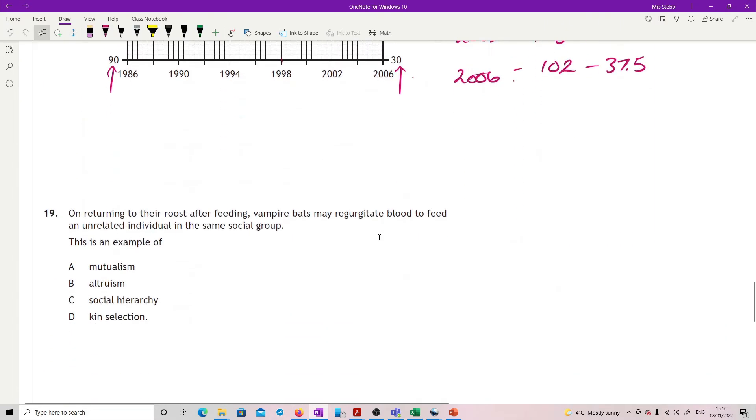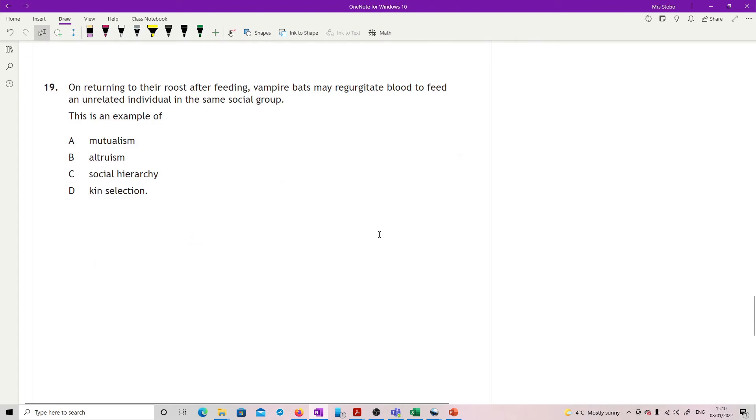Question 19: On returning to the roost after feeding, vampire bats may regurgitate blood to feed an unrelated individual in the same social group. This is an example of what? Importantly unrelated, so get rid of kin selection, because kin selection has to be between closely related individuals. Regurgitating blood to feed someone else means they are not gaining by it at all, so this is not mutualism. It's in the same social group, so it's not a hierarchy thing. What it is is altruistic, because they are harming themselves to benefit someone else.